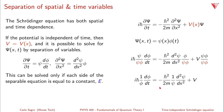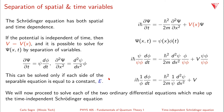This has a solution only if both sides are equal to a constant, which we'll call E. Since all the time dependence is on one side and all the spatial dependence on the other, they must each equal the same constant E. This turns out to be the total energy, but for now it's really just a separation constant. We'll solve each of the two ordinary differential equations and then put the solution completely together.